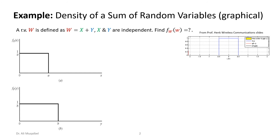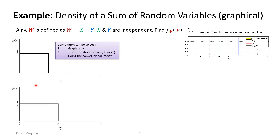Now let's do an example. A random variable W is defined as the sum of two independent random variables X and Y, and we want to find the PDF of W. Here I'm sketching the two PDFs: X is uniform from 0 to a with amplitude 1/a, and Y is uniform from 0 to b with amplitude 1/b — so both have area equal to one. Since we want the PDF of their sum, we're not summing the PDFs; we're convolving them, as we have seen.